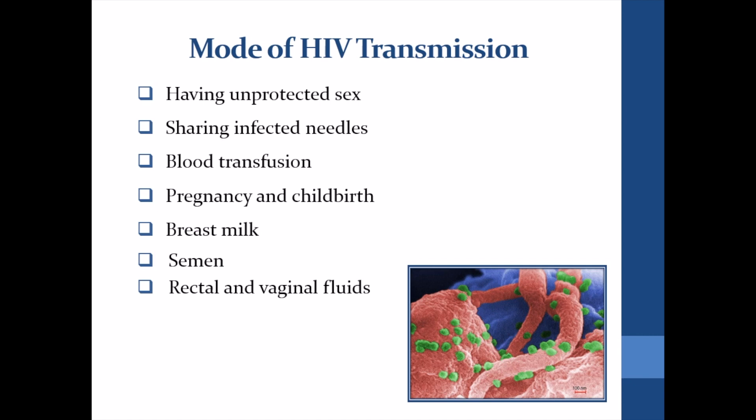How is HIV transmitted? HIV can be transmitted through several pathways. Having anal, oral, or vaginal sex with someone who has HIV without using a condom can cause one to become infected with HIV. Sharing contaminated needles can also cause the disease to be transmitted. People can also be infected after receiving contaminated blood, organs, or tissue transplants.